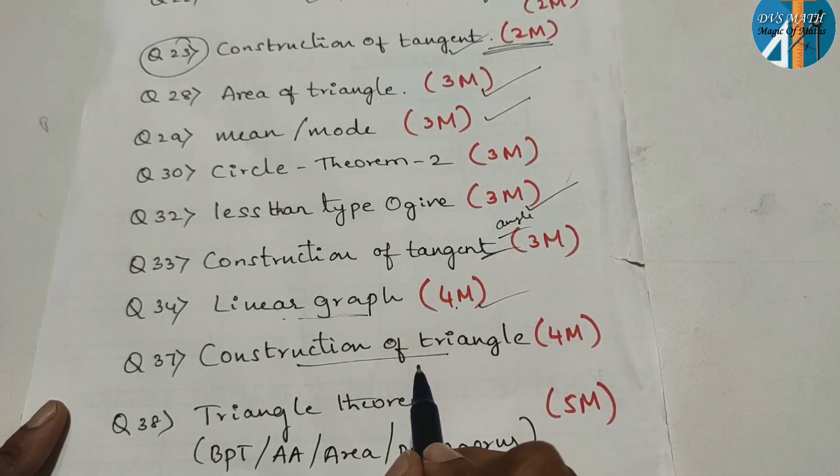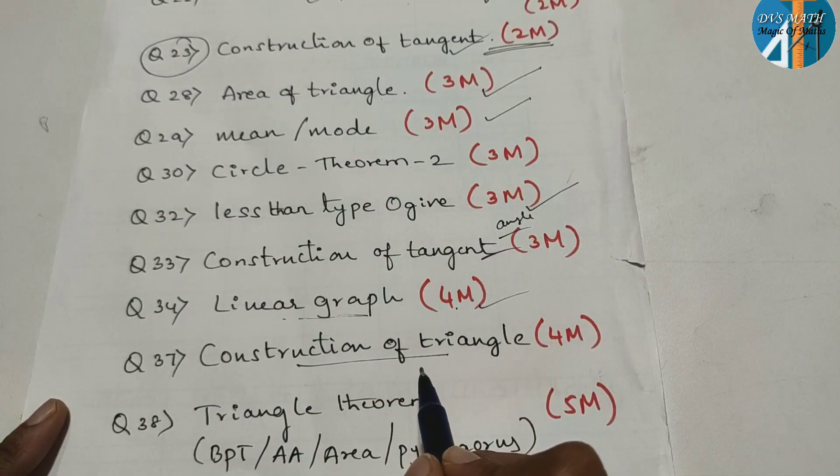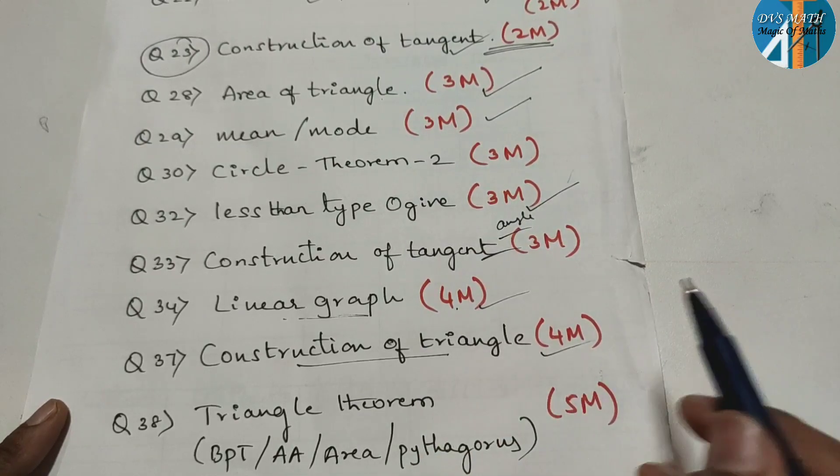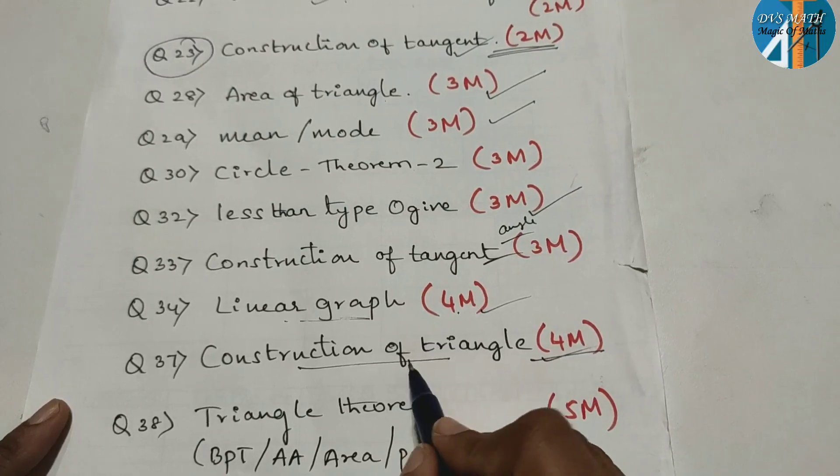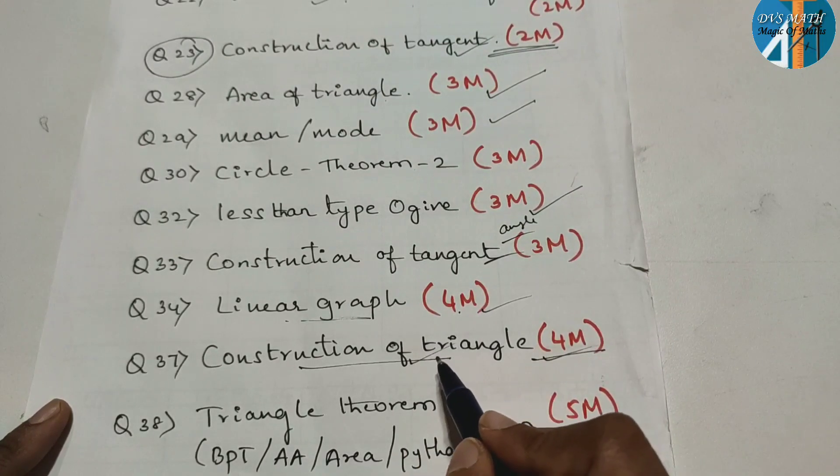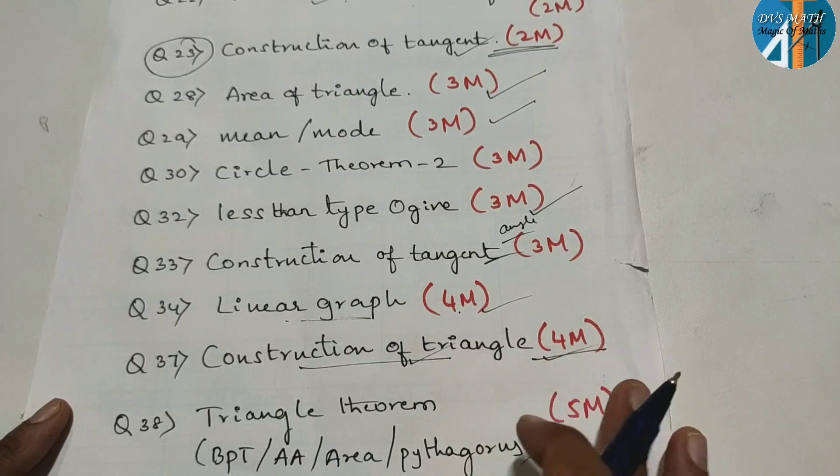In construction of triangle, I have said earlier, usually 3 marks. Now in this paper, this year's paper. But this time it is 4 marks. Both model paper 1 or model paper 2, 4 marks. This also I have done revision class, I have shown. Refer that.